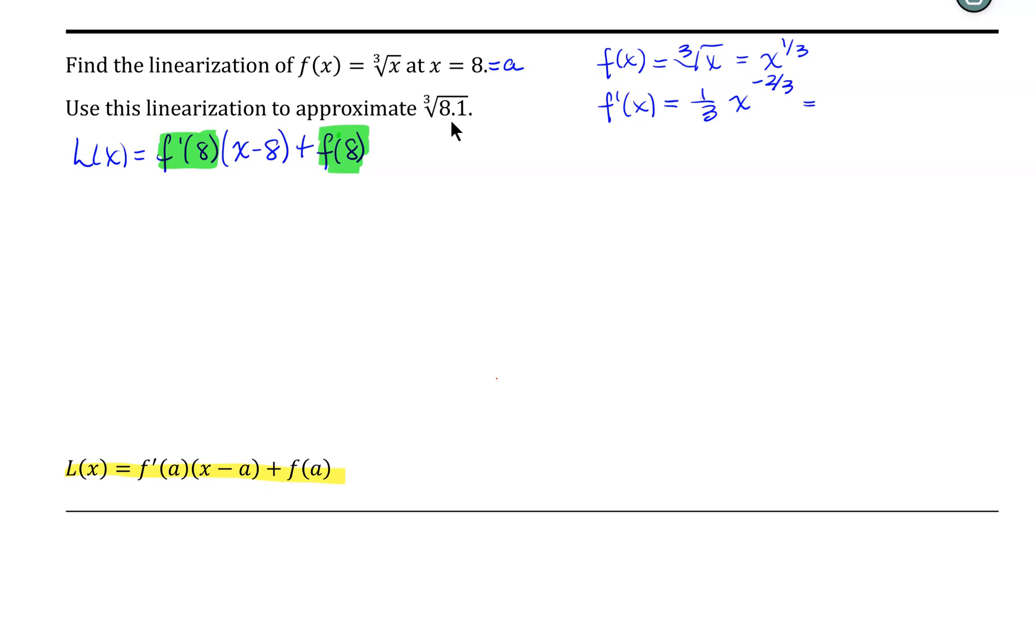I can rewrite this as 1 over 3 times x to the 2/3rds, which is equal to 1 over 3 times the cube root of x quantity squared.